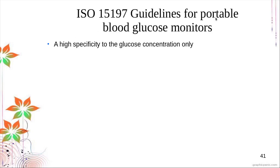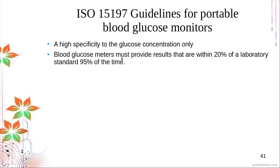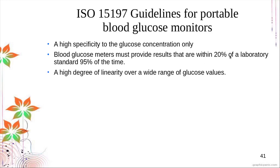The requirements for a portable glucose monitor under ISO 15197 include: high specificity to glucose concentration only, with no cross-reactions with other blood sugars or non-sugars such as salicylic acid, aspirin, or maintenance drugs. Blood glucose meters must provide results within 20% of the laboratory standard 95% of the time — meaning both accurate within 20% and precise 95% of the time.